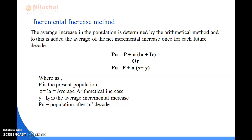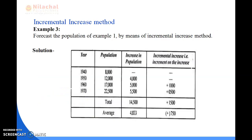Where 10 years equals one decade and 20 years equals two decades. IA is the average arithmetical increase and IC is the average incremental increase. In the alternative notation, X equals average arithmetical increase and Y equals average incremental increase.